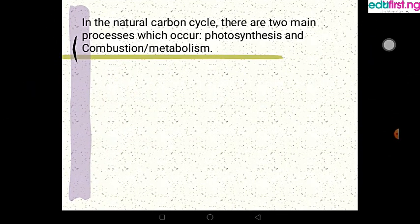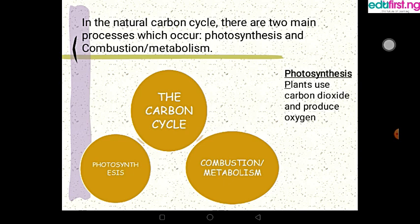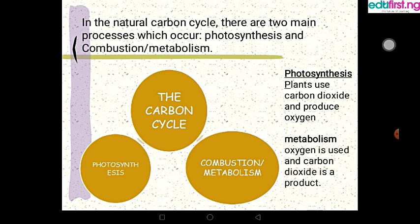Now in the natural carbon cycle we have two main processes which is the photosynthesis and the combustion alongside metabolism. So in the photosynthesis, plants make use of CO2, that is carbon dioxide, to produce oxygen, while in the metabolism stage oxygen is used and carbon dioxide is being produced as the by-product.